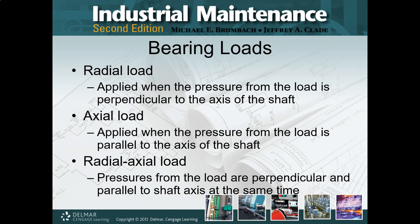If the force or pressure being applied to the bearing is in the same direction as the shaft — parallel to the shaft — then it is an axial load, because that load is parallel to the shaft. So we've got radial at 90 degrees to the shaft, and axial when the pressure or force is applied parallel to the shaft.